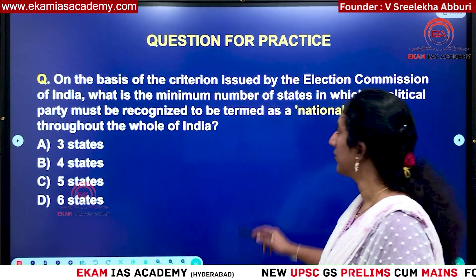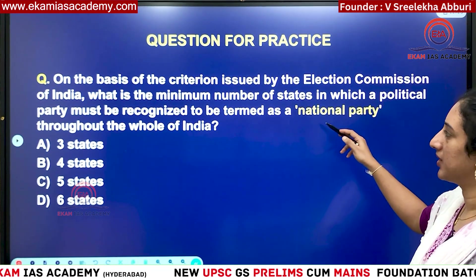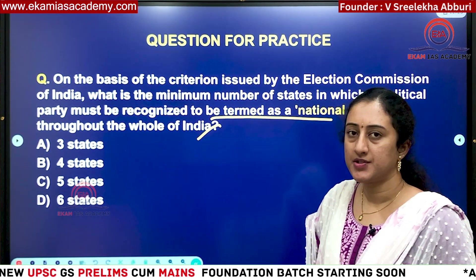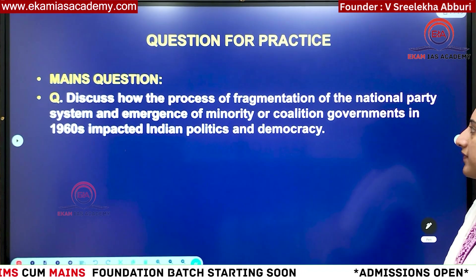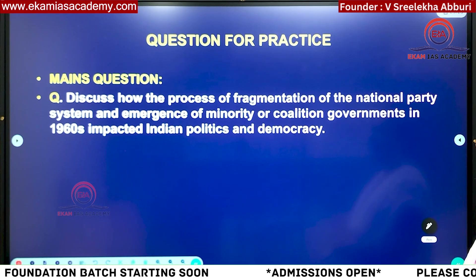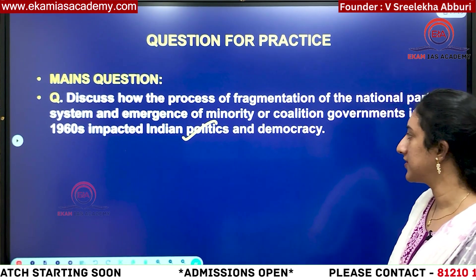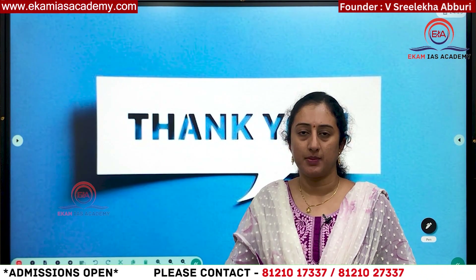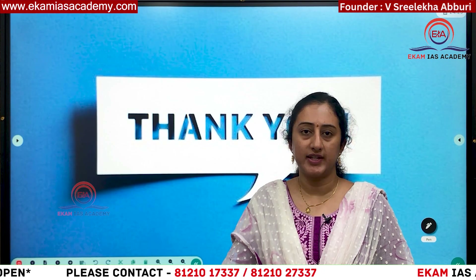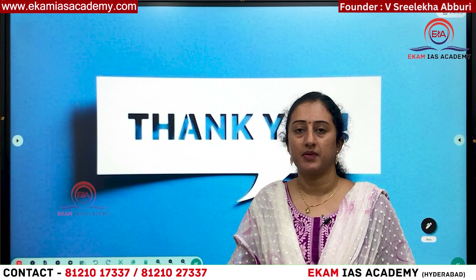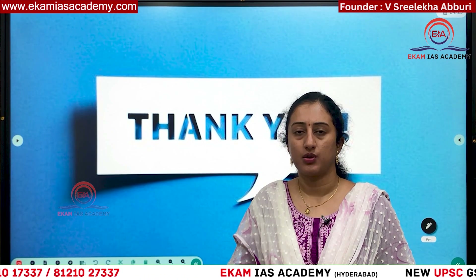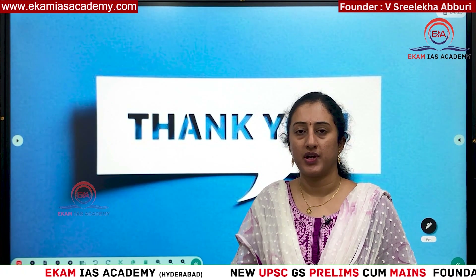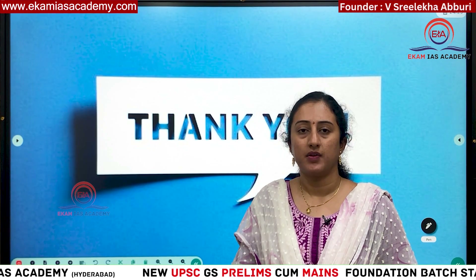Practice question for prelims: On the basis of the criterion issued by the Election Commission of India, what is the minimum number of states in which a political party must be recognized to be termed as a national party throughout the whole of India? Answer in the comment section. Main question: Discuss how the process of fragmentation of the national party system and emergence of minority or coalition governments in the 1960s impacted Indian politics and democracy. In this video we discussed the controversy surrounding the Shiv Sena party, the Supreme Court's verdict in the Nabam Rabia case, the power of the speaker regarding disqualifications, and who actually has power in defection-related cases.